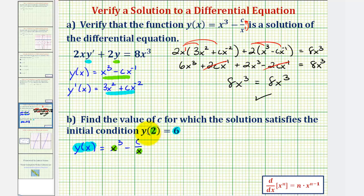So again, if y of two equals six, then six must equal two cubed minus c divided by two. So six must equal eight minus c divided by two.